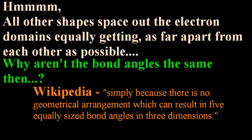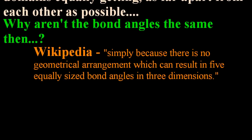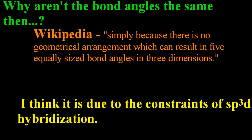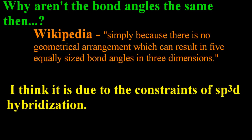Wikipedia says, simply because there is no geometrical arrangement which can result in five equally sized bond angles in three dimensions. There's no possible mathematical solution. I just don't believe that. I think it's due to the constraints of the SP3D hybridization that gives those angles.